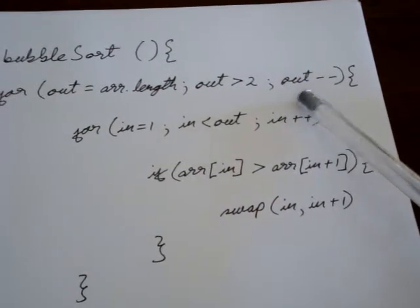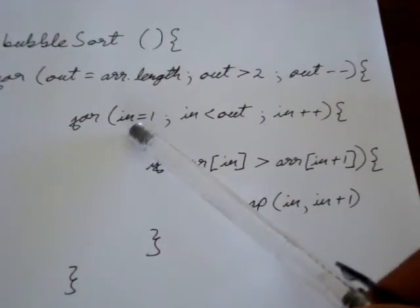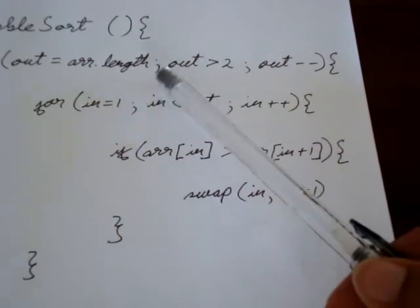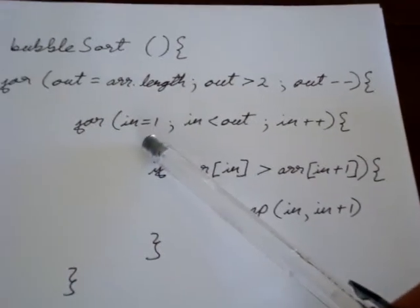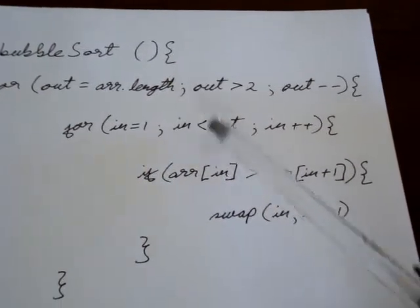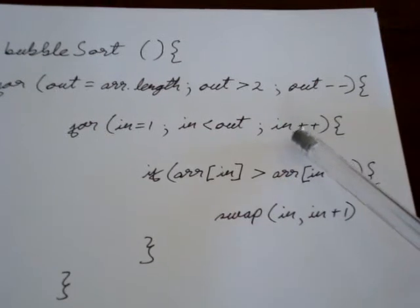Then we have the inner loop where in starts as one, as always. So every time out changes to a new value, in starts over as one as we had before. We go while in is less than out, and we are saying in plus plus for this loop. So in is moving one space to the right every time.